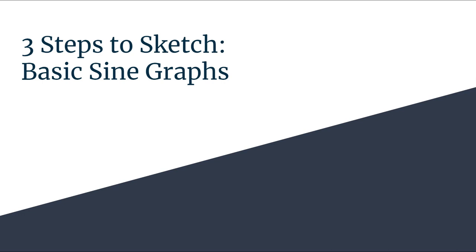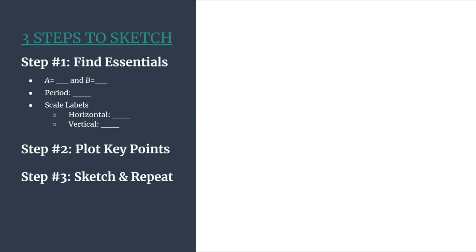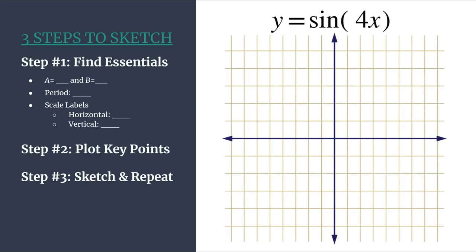In today's three steps to sketch, we are going to graph a basic sine graph, y equals sine of 4x. So we have our outline on the left and our equation and grid on the right. We know that this is a basic sine graph because it's in the form y equals A sine of Bx. We see there is not any shifting going on, so we have a more basic graph to deal with here. We're using the simpler method. Let's jump in with step one.